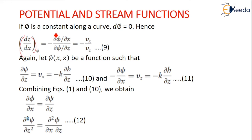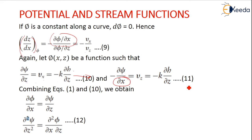We know that dou phi by dou x is nothing but vx, and dou phi by dou z is nothing but vz. Similarly, we take psi of x and z to be a function such that dou psi by dou z equals vx, which equals minus k into dou h by dou z — this is equation 10. Similarly, in the x direction we have equation 11. Combining equations 1 and 10, we get dou squared psi by dou z squared equals dou squared psi by dou x dou z.